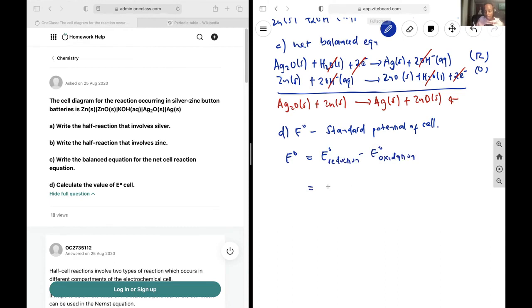We know what half is what. So the reduction half is the silver half. So that is going to be Ag2O becoming Ag minus that zinc becoming zinc oxide.